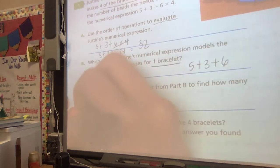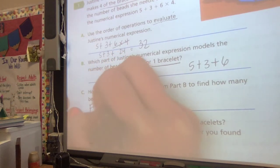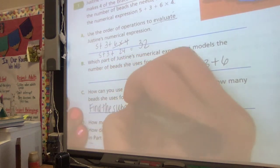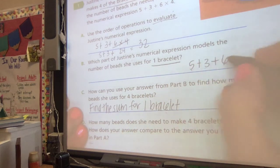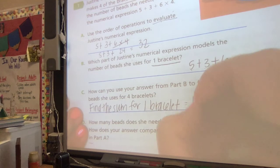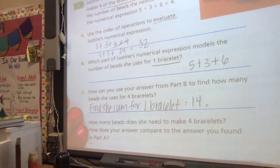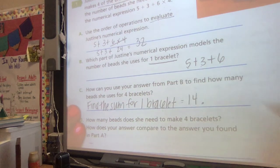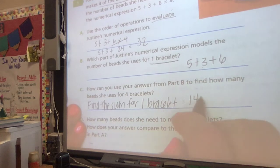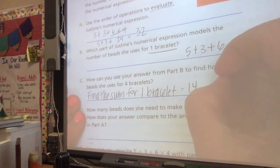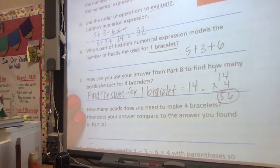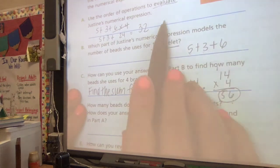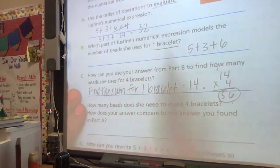Maybe find the sum for one bracelet. 5 plus 3 is 8, and 8 plus 6 is 14. And then, what could we do to figure out for 4? If one of them is 14 beads, then 4 of them would be 14 times 4, which is 56. And I'm getting something very different than what Justine had written up here. I'm noticing that.